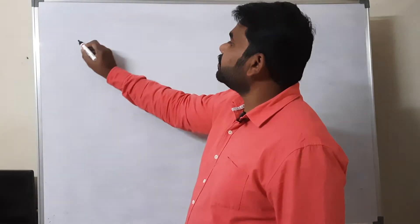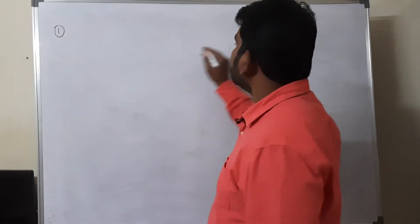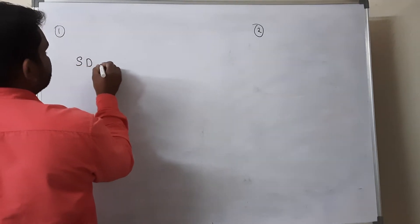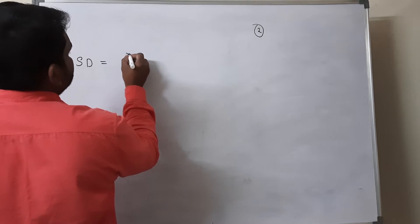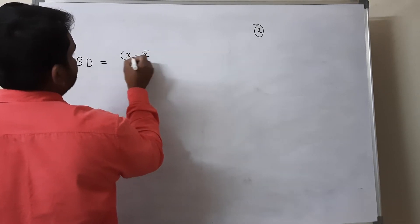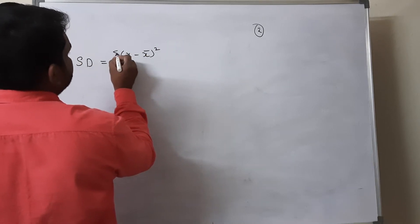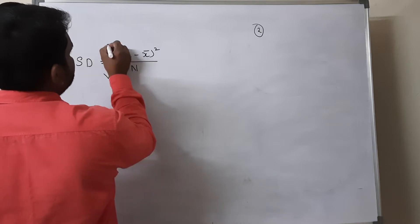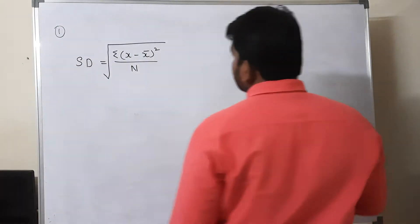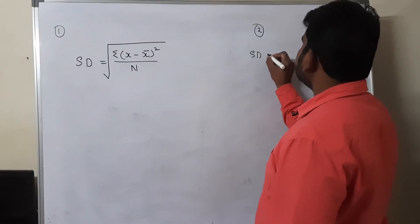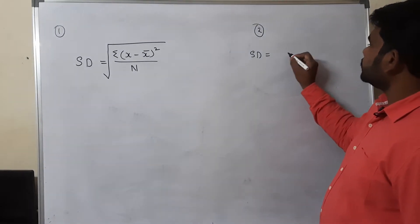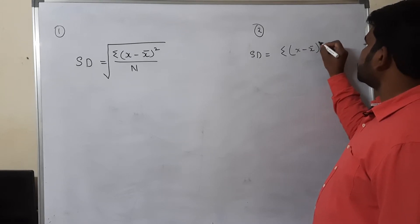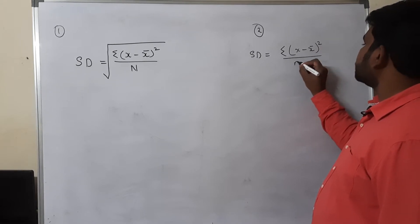So we have two types of formulas. Formula number one: standard deviation equals the square root of the sum of (x minus x-bar) squared divided by N. Formula number two: SD equals the square root of the sum of (x minus x-bar) squared divided by (n minus 1).